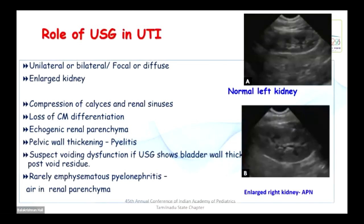The role of ultrasound imaging in UTI: This is the primary imaging done for children with UTI. It can identify upper tract involvement, whether unilateral or bilateral, and whether involvement is focal or diffuse. Acute pyelonephritis is characterized by renal megaly, compression of calyces, altered corticomedullary differentiation, echogenic renal parenchyma, and pelvic wall thickening as a sign of pyelitis. Bladder wall thickening and significant post-void residue suggest voiding dysfunction. Rarely, emphysematous pyelonephritis may show air in the renal parenchyma.